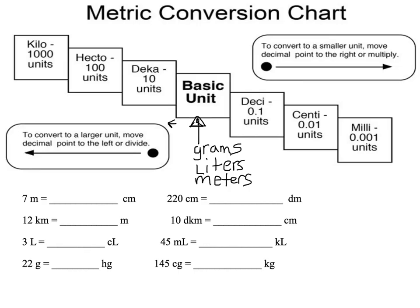In order to do conversions, one of the most important things you're going to need to know is the order of this conversion chart. So you're going to need to know that the largest would be kilo, then comes hecto, deca, then your basic unit, then deci, then centi, and then milli.